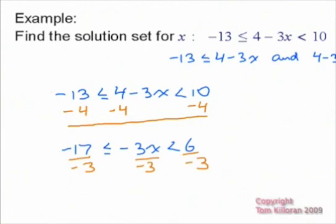So, the left-hand side is 17 thirds. But this less than or equal is going to have to flip to become greater than or equal. Then we'll have x. This less than is going to have to become greater. And it's going to be negative 2.